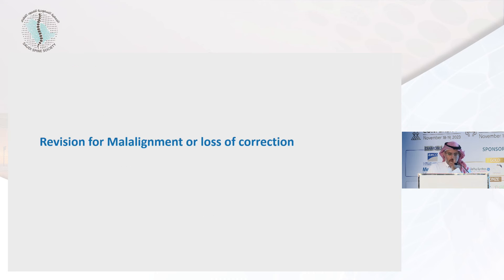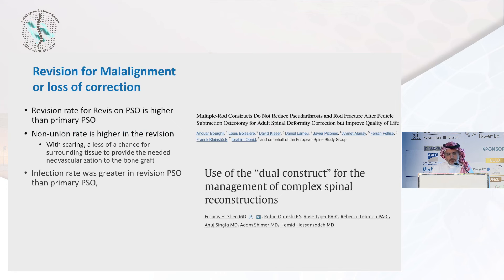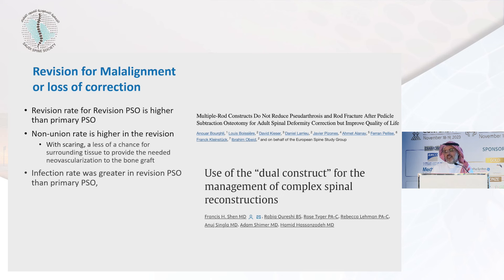Now malalignment or loss of correction — the third group. The revision rate for revision PSO is higher. If we're doing a PSO to correct malalignment, we should know in advance that the rate of failure with revision is more than in the primary. The nonunion rate is higher in revision than primary, and the infection rate is higher in revision than primary.